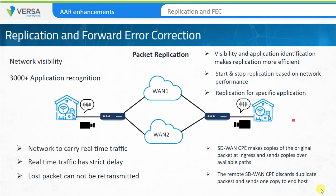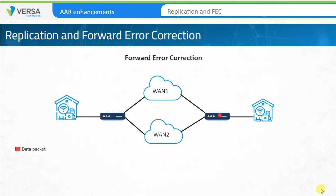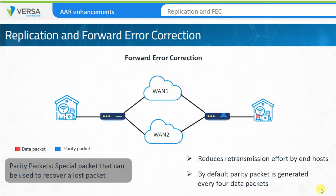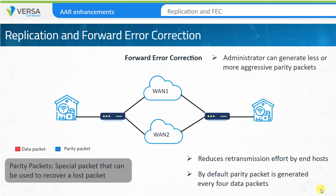Like replication, forward error correction, or FEC, enables the recovery of lost or corrupted packets by regenerating them using special packets called parity packets. This reduces retransmission efforts by end nodes. With this technique, a special packet known as a parity packet or FEC packet is generated in the data stream. By default, a parity packet is generated for every four packets transmitted, but administrators can define less or more aggressive generation of parity packets. The receiving node can regenerate a lost packet using the FEC packet so that the end station doesn't require a retransmission of the lost packet.